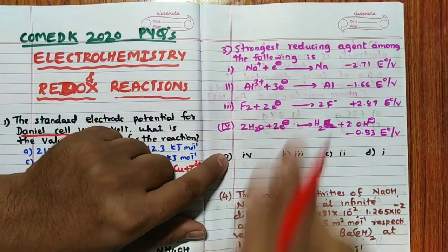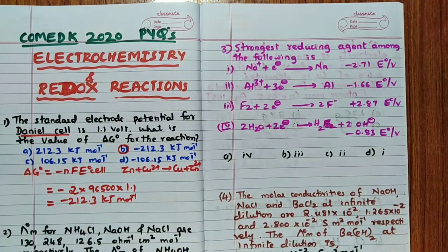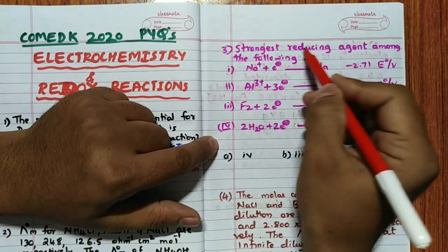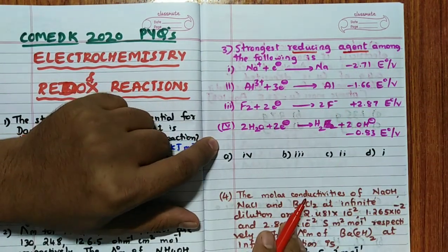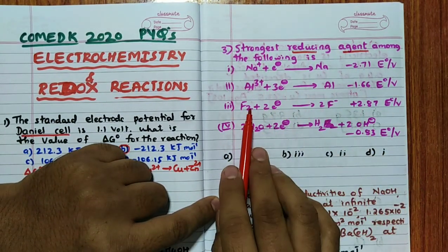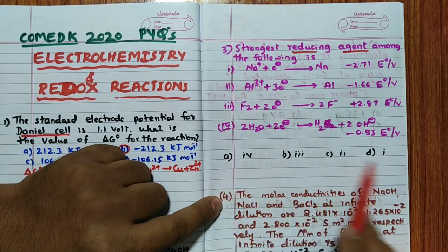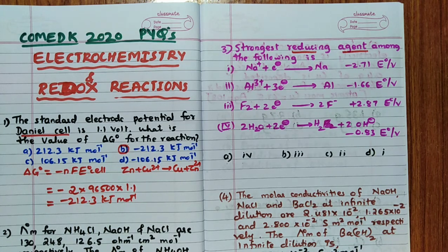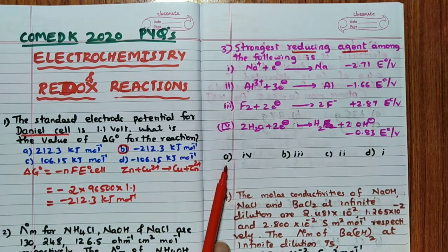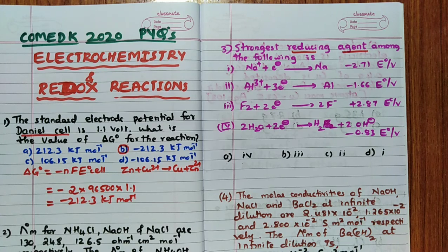The third question, from the electrochemical series covered in both redox reactions and electrochemistry chapters: the strongest reducing agent among the given options — sodium (-2.71), (-1.66), (+2.87), (-0.83) — must be identified. Remember: more negative reduction potential means a better reducing agent.